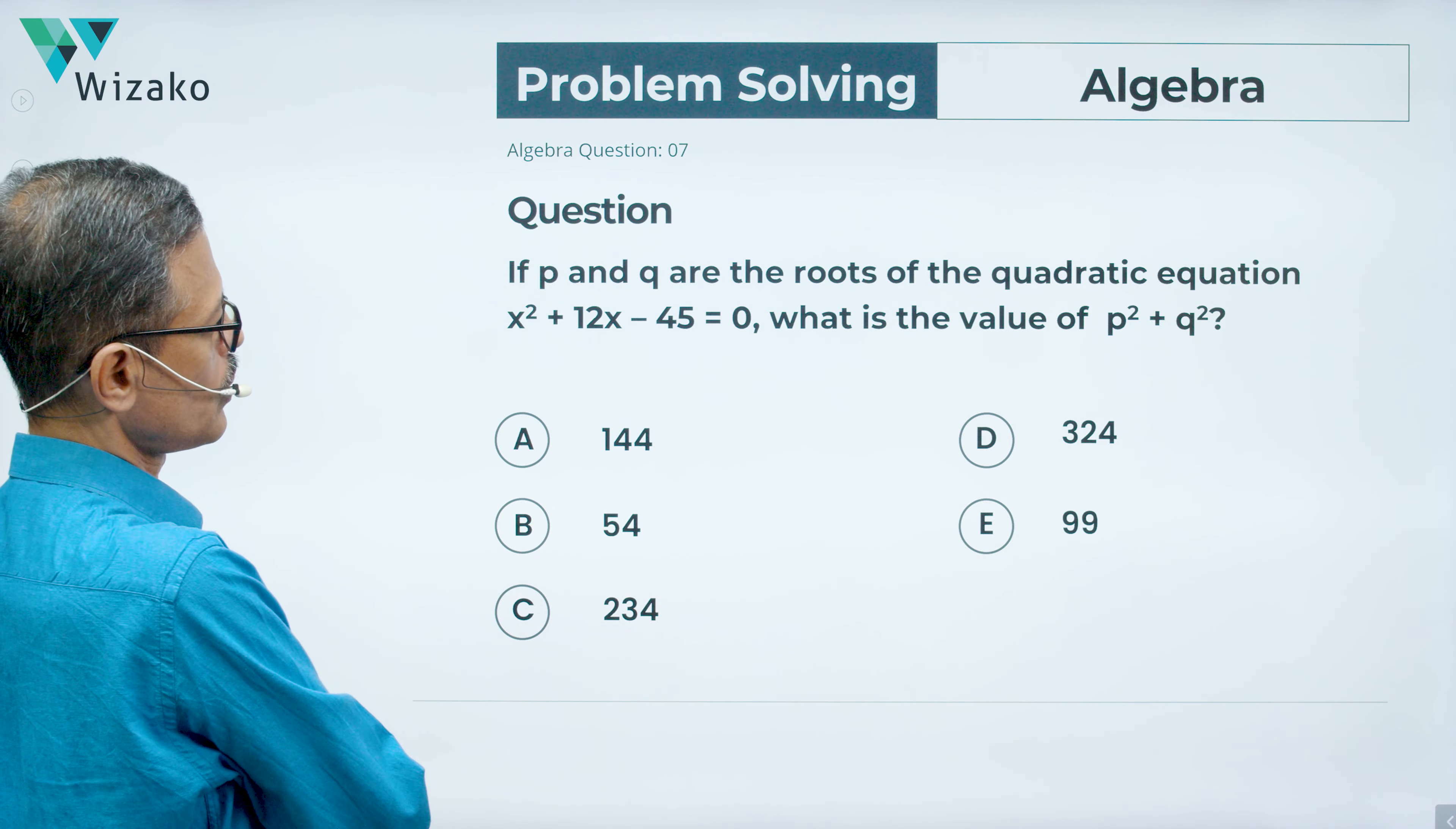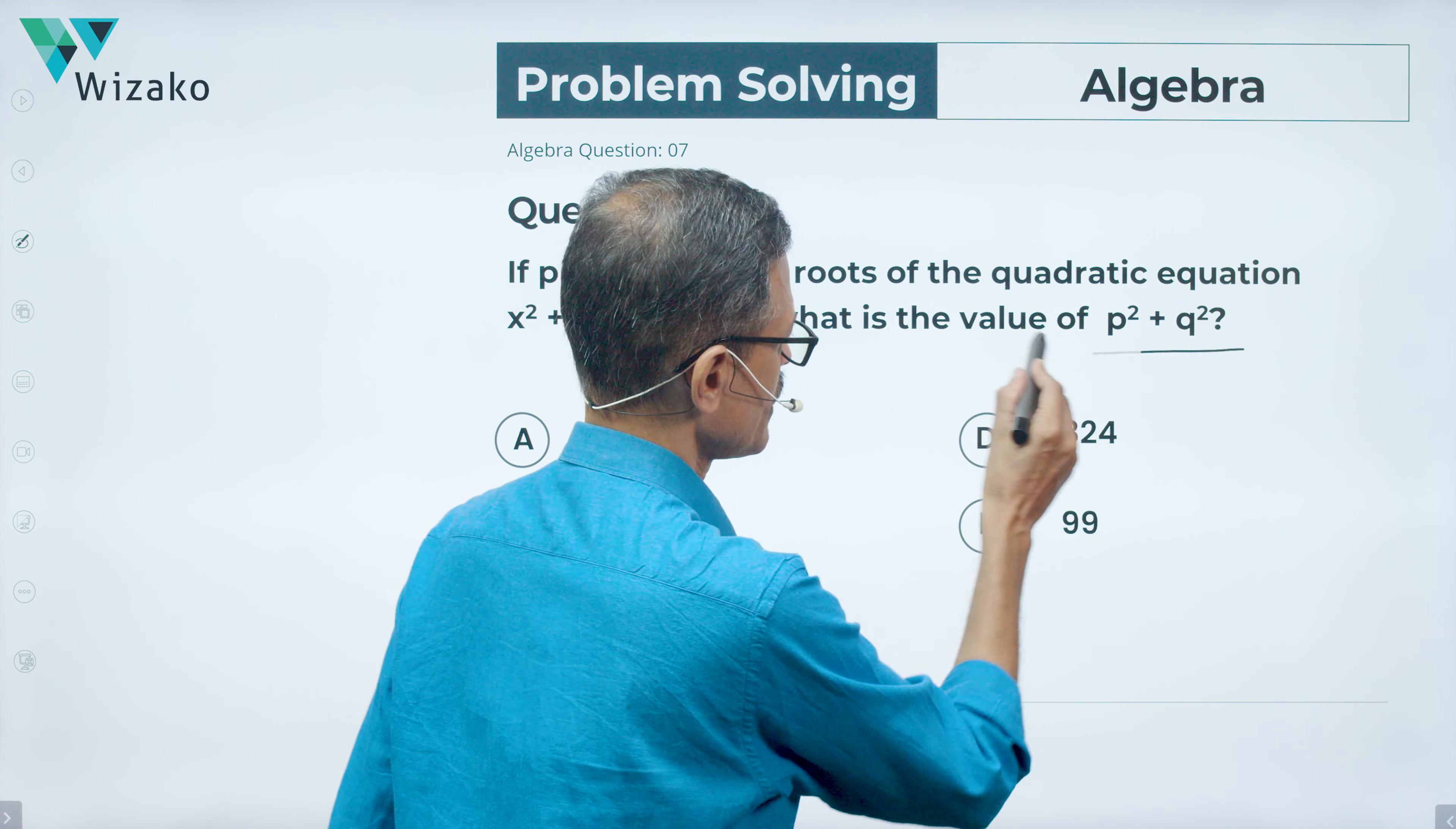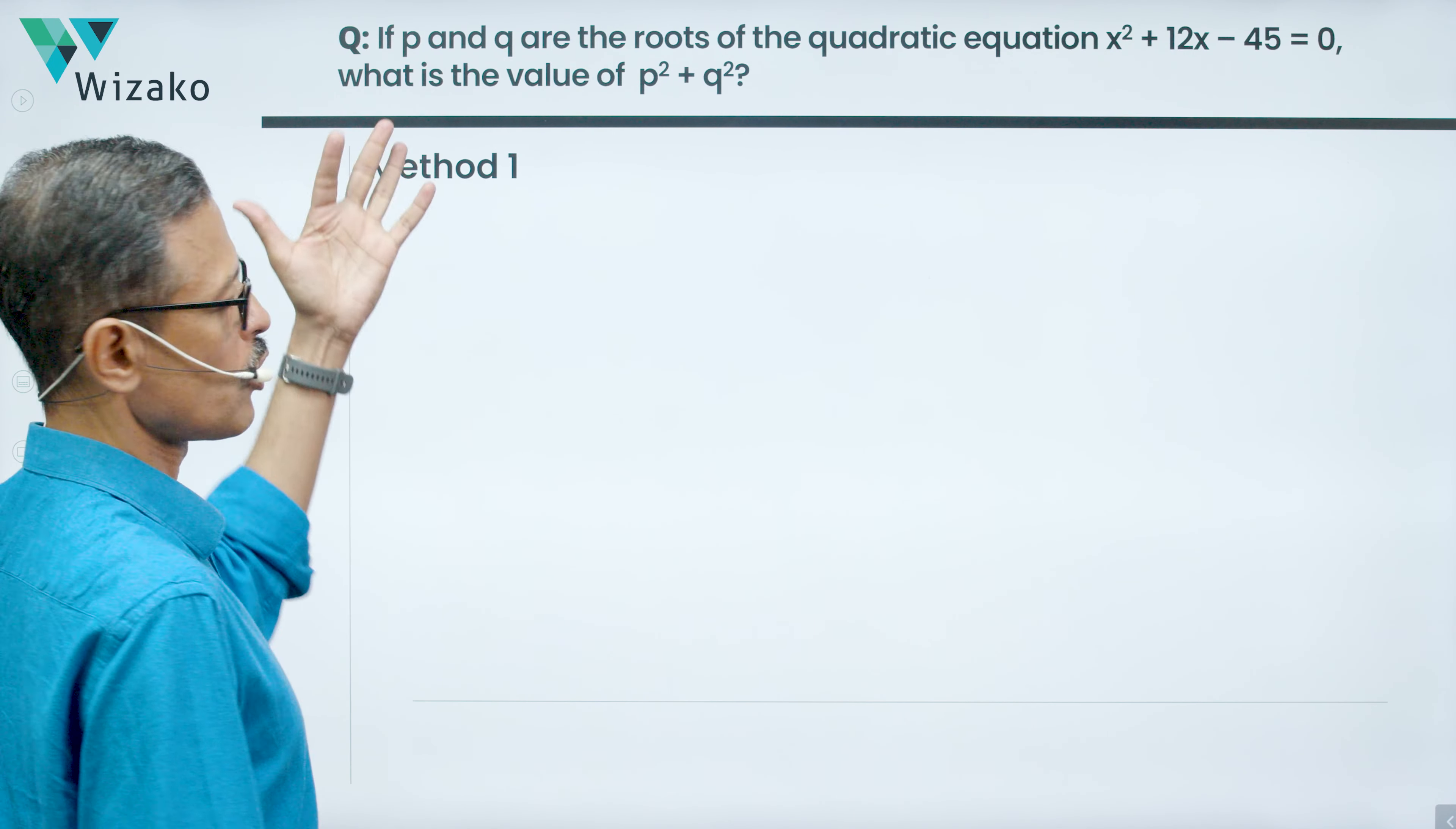If p and q are the roots of the quadratic equation x² + 12x - 45 = 0, what is the value of p² + q²? That's what we need to find out. As I mentioned at the start of the video, I'm going to be solving this question using two methods. The first one is the most intuitive, obvious one.